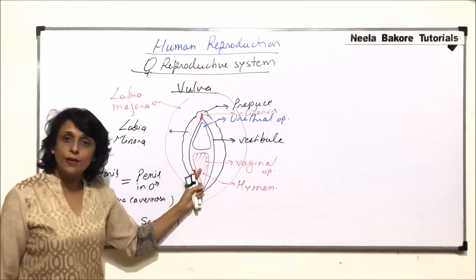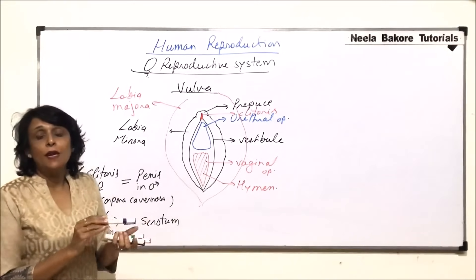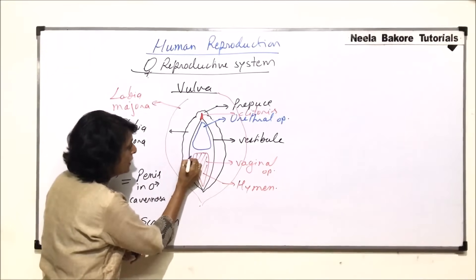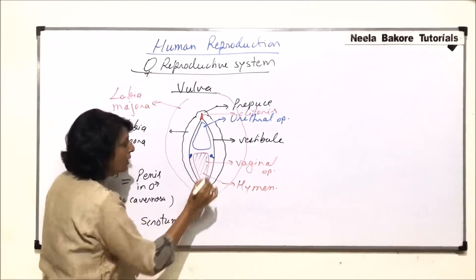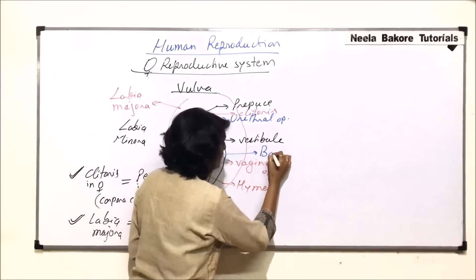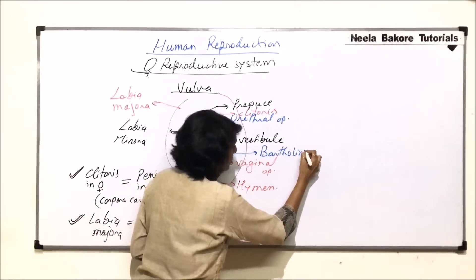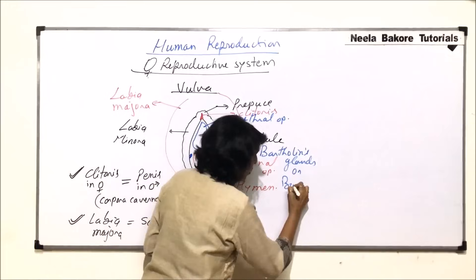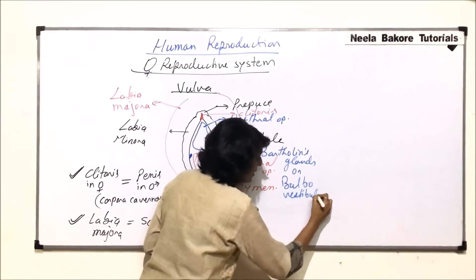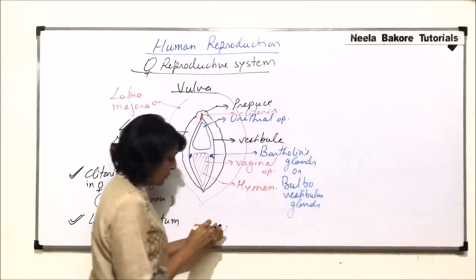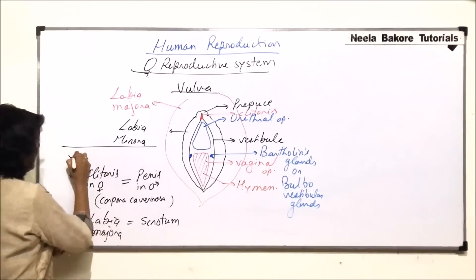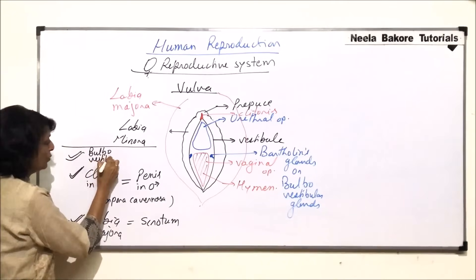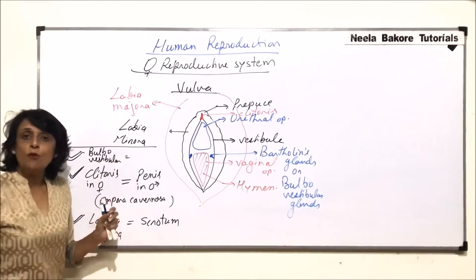Two openings are present in the vestibule: the upper is the urethral opening through which urine is let out, and the lower is the vaginal opening. Now, in the vestibular region on both sides of the vaginal opening there are small glands known as Bartholin's glands, also known as bulbo-vestibular glands.